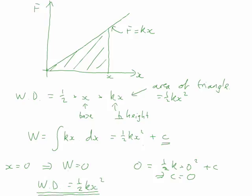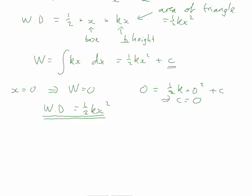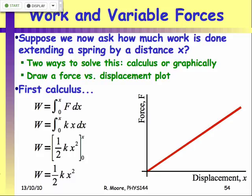That is the work done stretching a spring, and that is then stored in the coils of the stretched spring. We call that the elastic potential energy — the potential for the spring to do work. That stretched spring can do up to that amount of work as it reduces its extension to zero. So one-half kx squared is both the work done and the elastic potential energy. This is another form of mechanical energy you'll have to deal with in problems — energy stored in a stretched spring, stretched elastic, or similar.